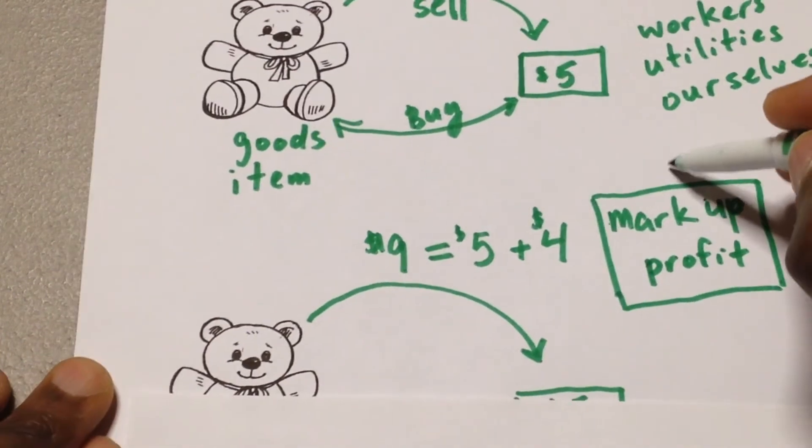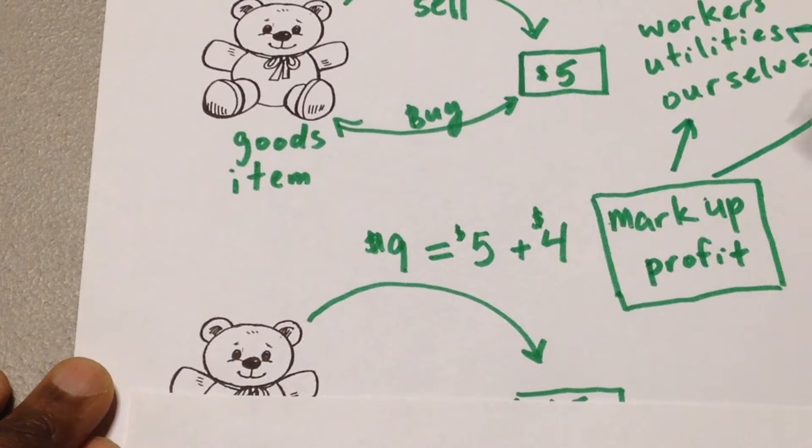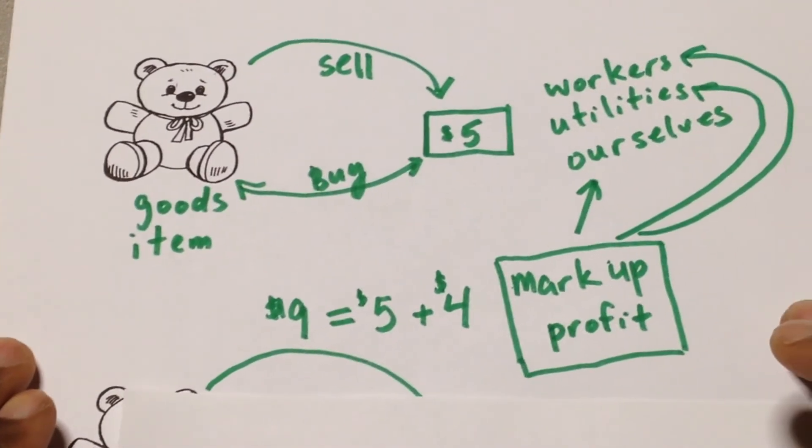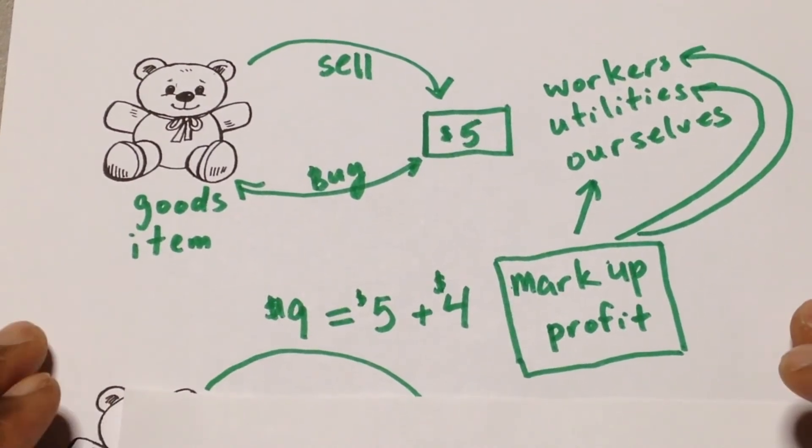That's how we make our money. So the $4 is the markup that we did. We marked up the price of $4 and then we take that in order for us to make a profit. And with that profit, we can now take care of ourselves, we could take care of our utilities, we can take care of our workers. Now that's just the beginning of what we're doing with it, but that's an idea of how markup works.